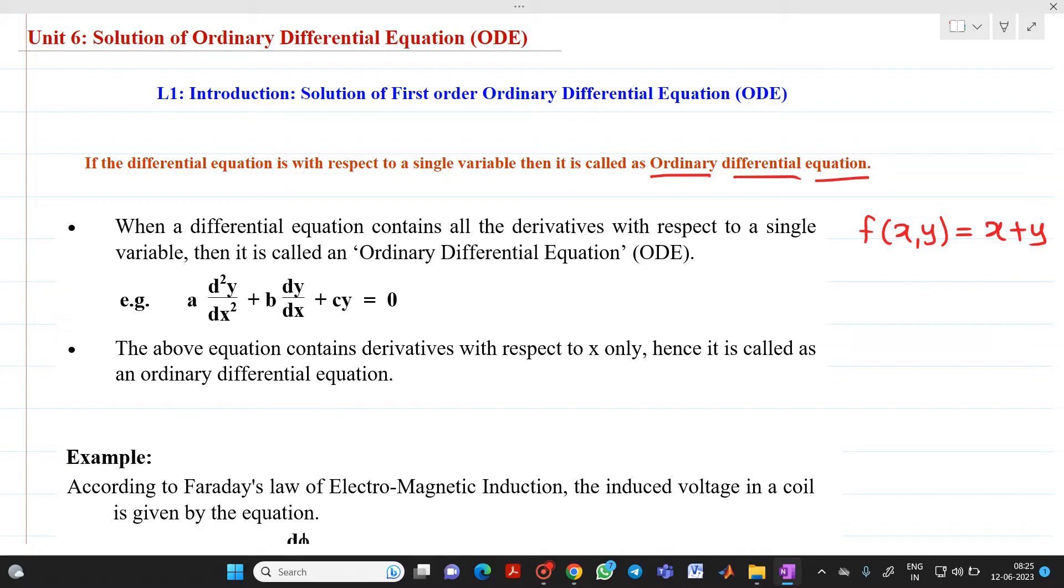Let's take an example. Suppose if we have a d square y by dx square plus b dy by dx plus c into y equal to 0. Now if you observe in above equation, it contains all the derivatives with respect to x. So that's why this is called as ordinary differential equation.